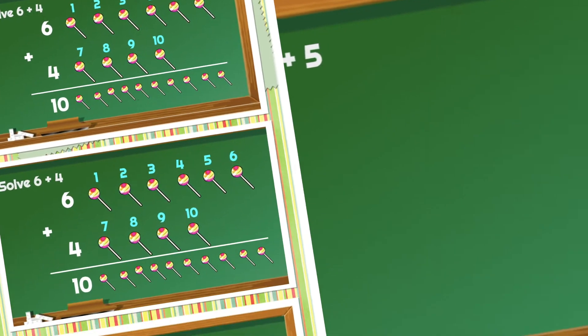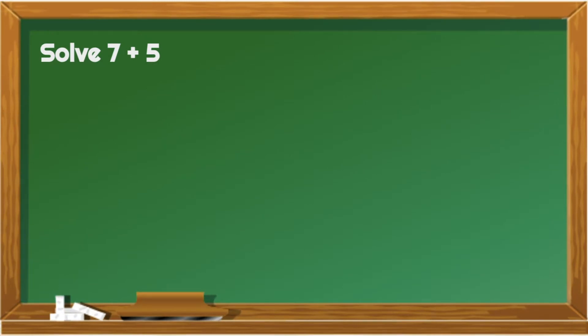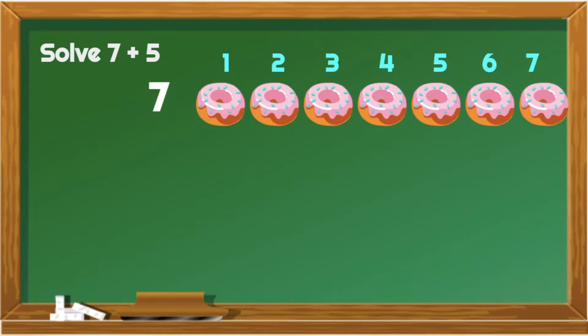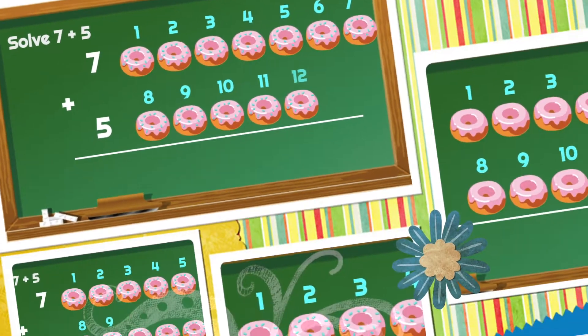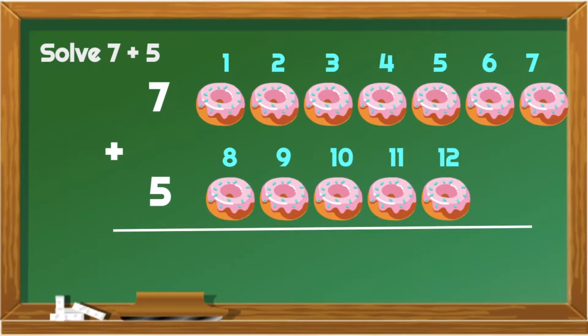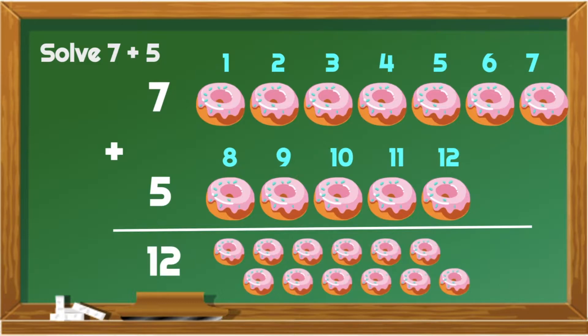That's right! Next, let's add 7 plus 5. Start with 7, and let's continue counting 5 more. 8, 9, 10, 11, 12. 7 doughnuts plus 5 doughnuts is equal to 12 doughnuts. Well done, learners!